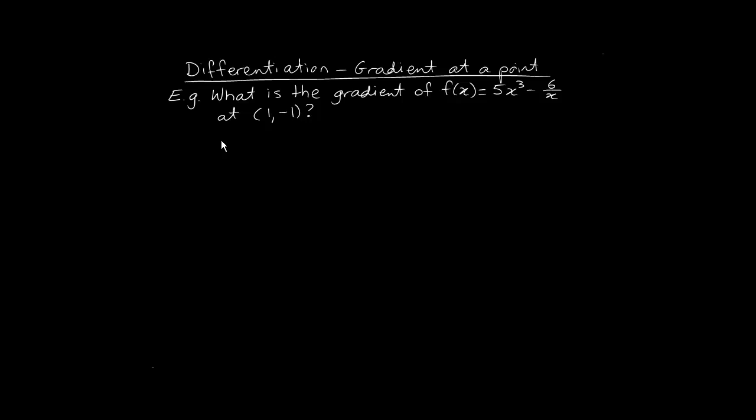What is the gradient of this function f(x) = 5x³ minus 6 over x at the point (1, -1)?